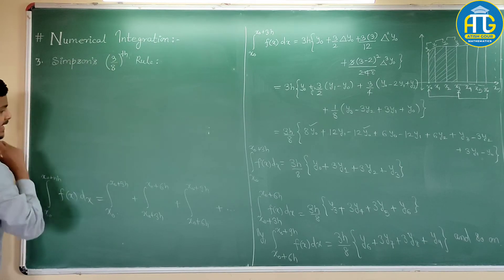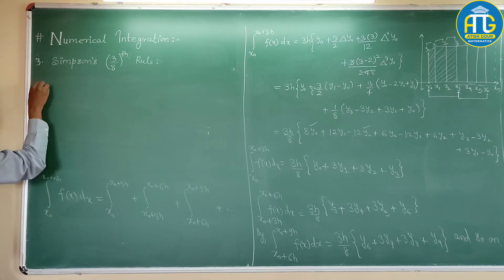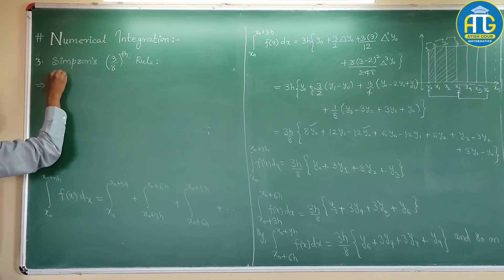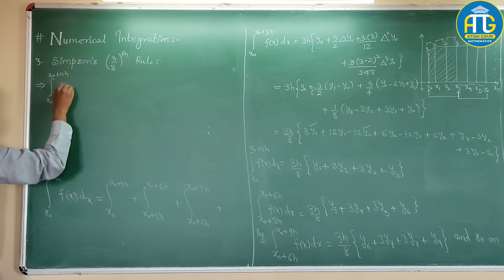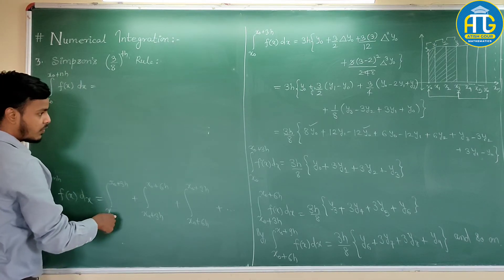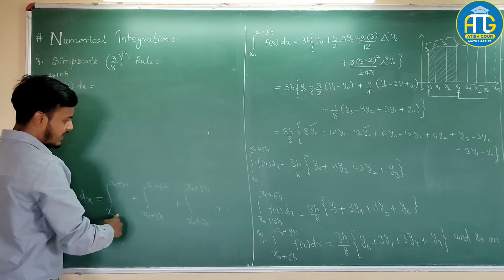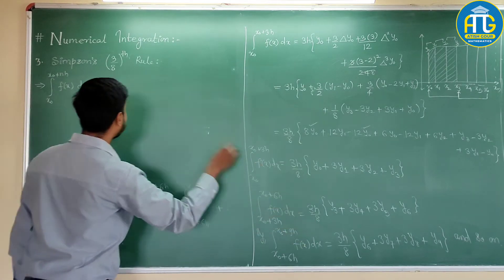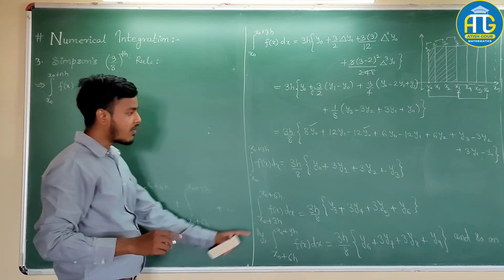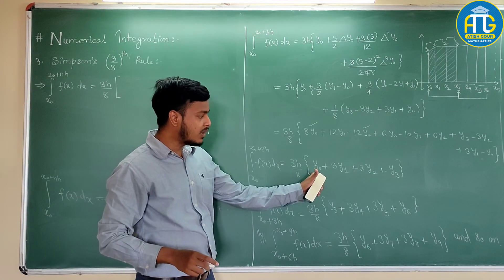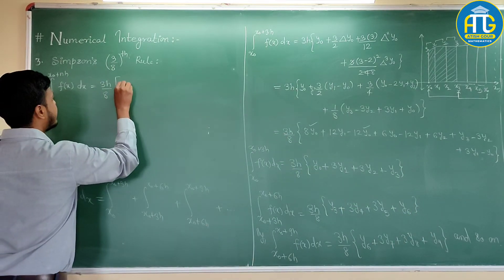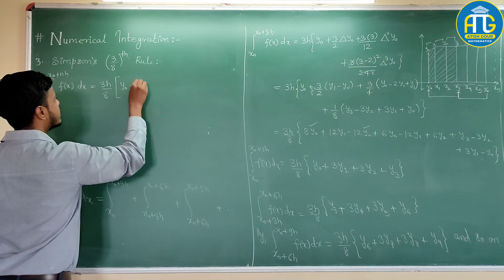So, let me write this. Integration from x0 to x0 plus nh, f of x dx is equal to, for this we have to add all this. So, we have 3h by 8 common. So, in the bracket we remain with, now we have only 1 times y0 and we would be having only 1 times yn. So, let me write down y0 plus yn.